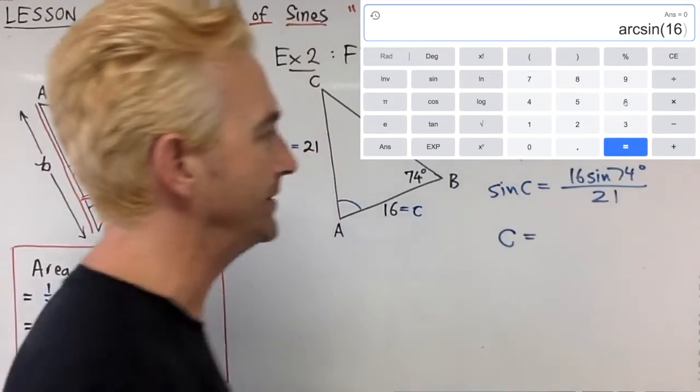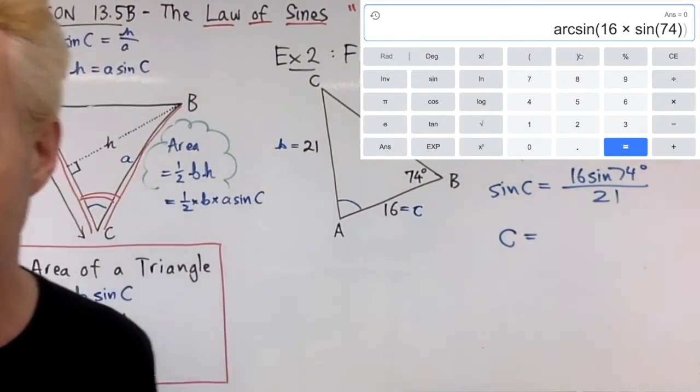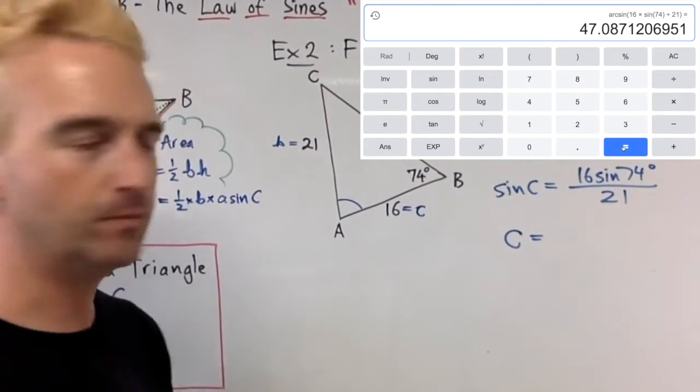Go to your calculator and figure out what is angle C. It's going to be the inverse sine of all this. If you do that, the answer is angle C is 47.1 degrees.